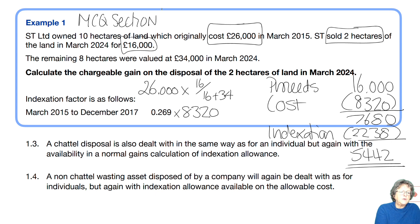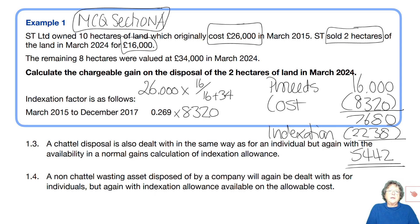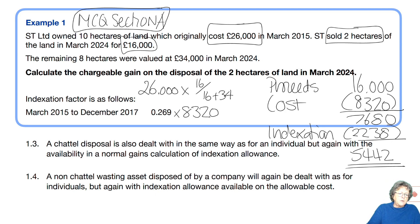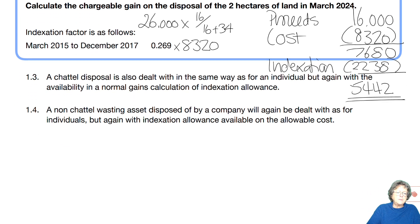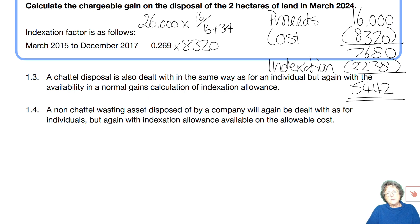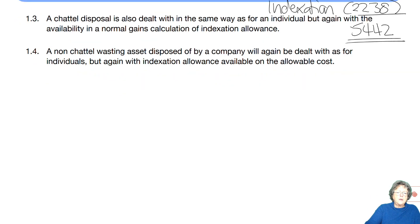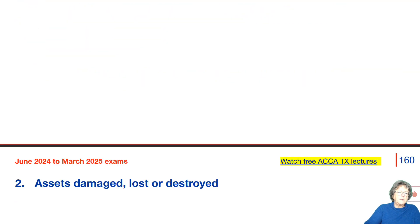In the exam you'll either have a box to fill in, or you'll have options A, B, C, D from which you can choose the correct answer. A chattel disposal is exactly the same as for individuals, but again we have indexation. Non-chattel wasting assets are again the same as individuals, but we have indexation allowance.